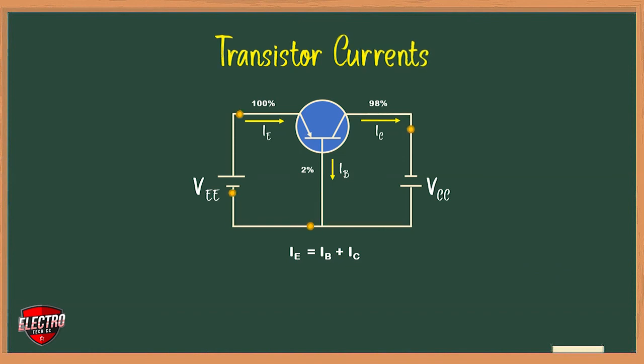It means that a small part, about 1 to 2 percent of emitter current, goes to supply base current, and the remaining major part, 98 to 99 percent, goes to supply collector current. Moreover, IE flows into the transistor, whereas both IB and IC flow out.